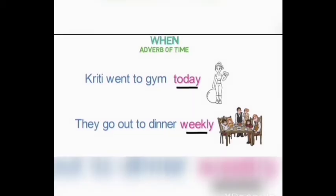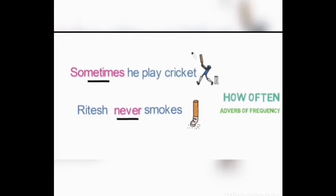Now let's look at the fourth way — how often or frequently an action is happening. 'Sometimes he plays cricket.' Here we understand that he plays cricket, but how often — he plays sometimes. So 'sometimes' is the adverb. 'Ritesh never smokes.' Here 'never' describes the frequency of his smoking, so 'never' is the adverb. As this adverb describes the frequency of the action, it is called adverb of frequency.